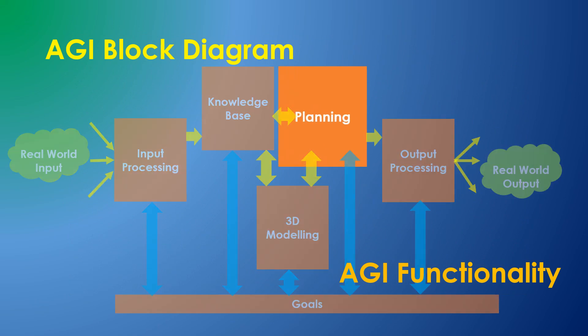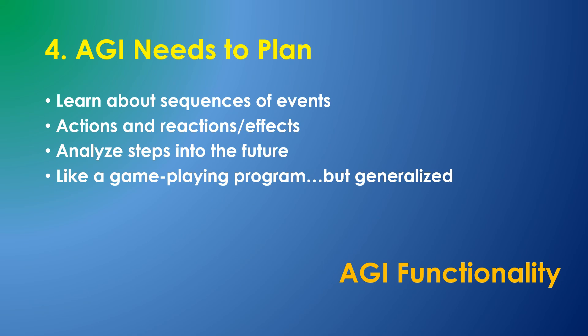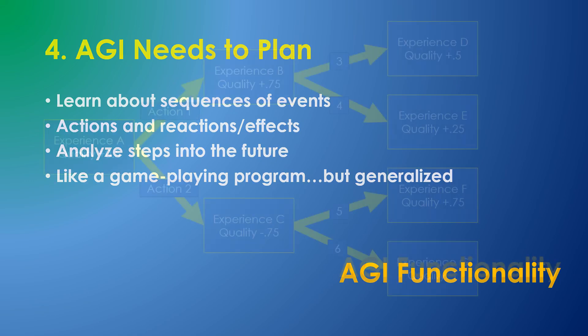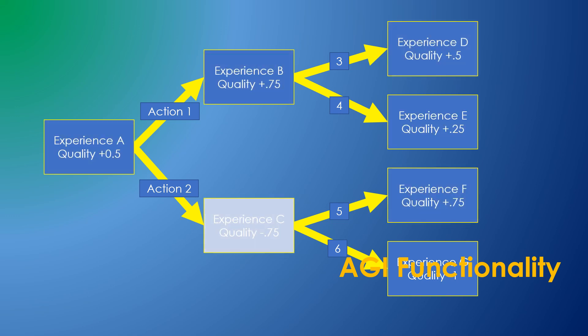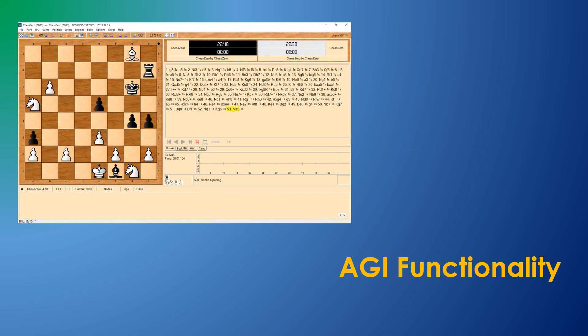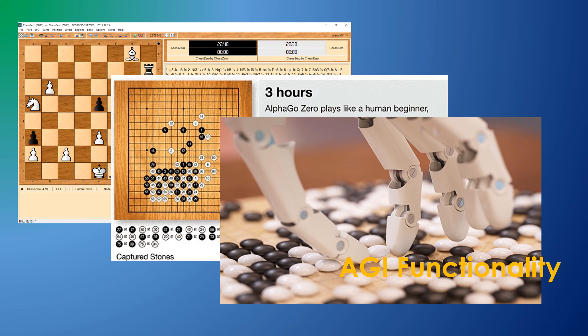Number four: AGI needs the ability to plan. One of the things which differentiates thinking behavior is imagining the results of doing something before you do it. This ability could lead to logic, mathematics, and many thinking activities — you could learn the rules of the game and play chess by planning your next move. Planning is a generalization of a learning system like AlphaGo Zero, generalized to work with learned real-world things well beyond the limited moves and rules of a game.